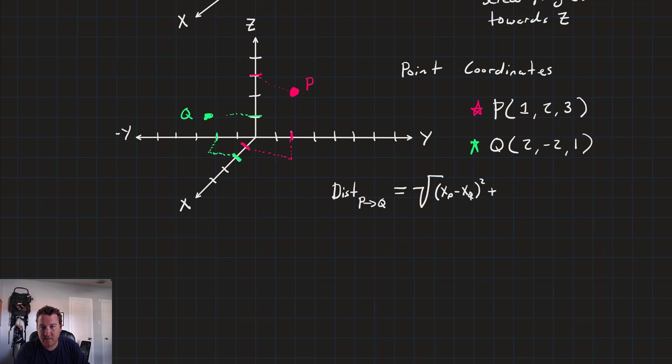So, the distance, or the difference in the x-coordinates squared, plus the difference in the y-coordinate squared, yp minus yq squared, plus the difference in the z-coordinates, zp minus zq squared. And that whole thing is square rooted. It's just a three-dimensional Pythagorean Theorem.